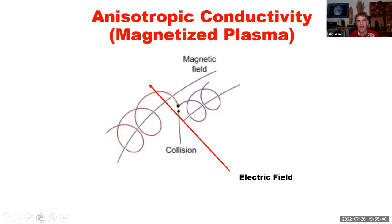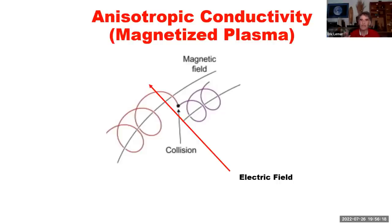The second phenomenon is anisotropic conductivity in magnetized plasma. This means that in a plasma that is not terribly dense — not like the density of stars — the magnetic field is sufficiently strong that particles, either electrons or ions, will travel in circles around the magnetic field direction and only occasionally collide to move in a direction perpendicular to the field. That means even if the electric field is almost perpendicular to the magnetic field, the current will move in the direction of the magnetic field, not in the direction of the electric field. This is a phenomenon we've studied in fusion plasmas; it's dominant throughout the universe and unfortunately is not that well understood.